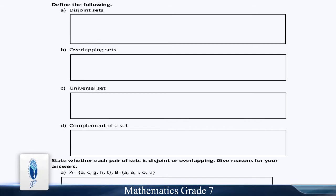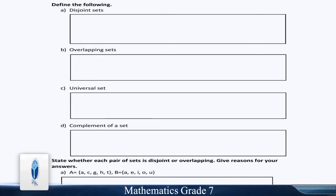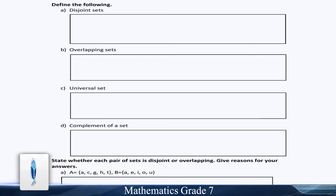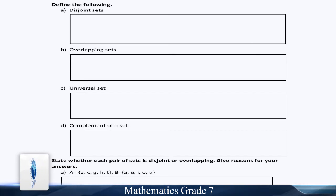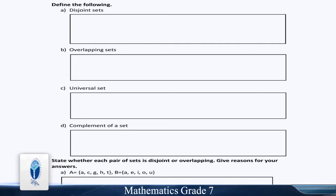State whether each pair of the sets is disjoint or overlapping. Give the reasons for your answers. Part A: A = {C, E, G, H, D} and B = {A, E, I, O, U}.